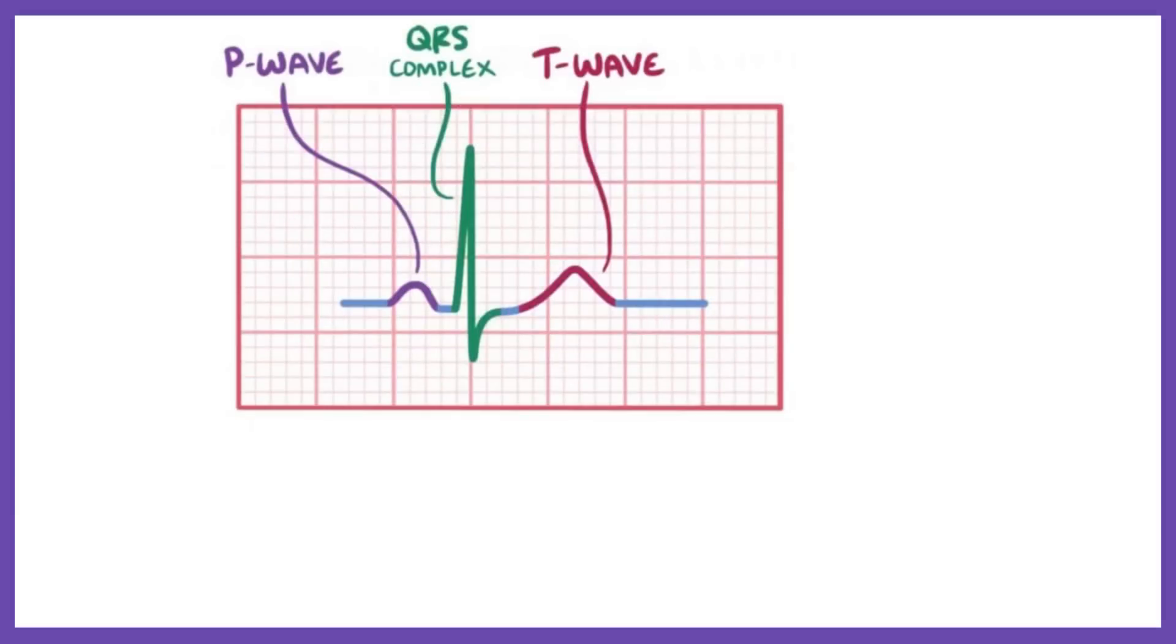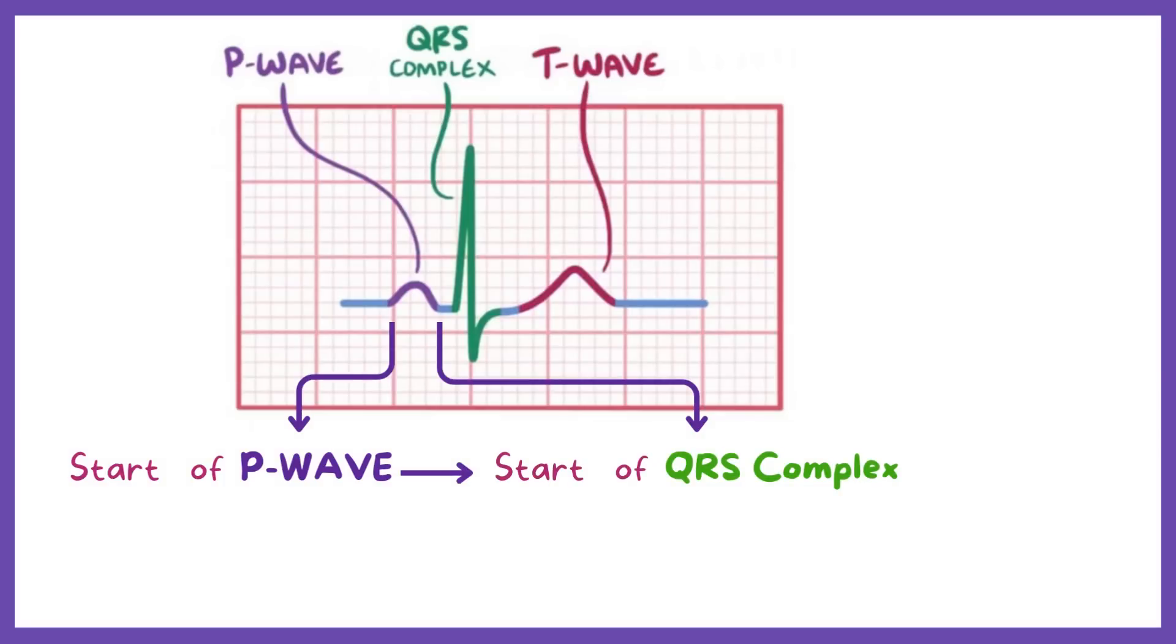The PR interval spans from the beginning of the P-wave to the beginning of the QRS complex, and it represents the time from the beginning of atrial depolarization to the beginning of ventricular depolarization.